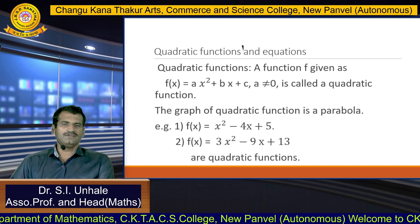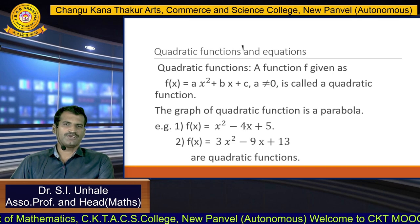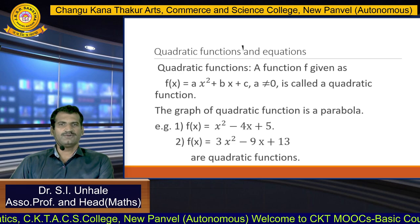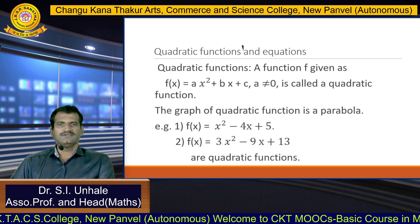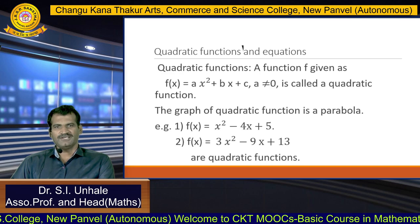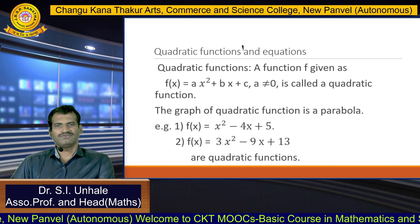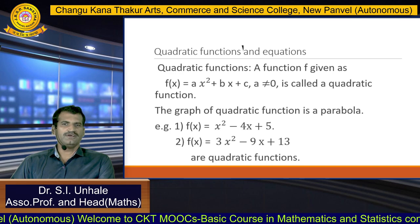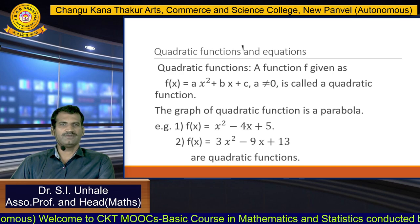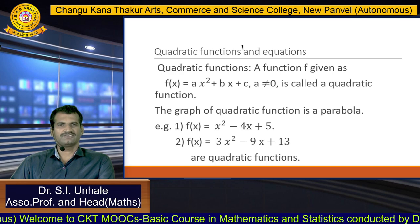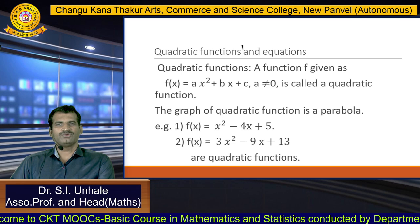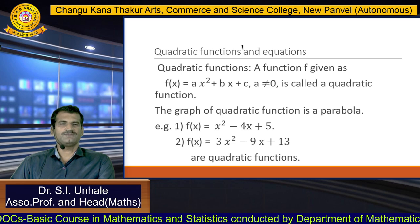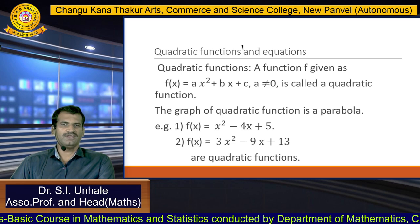For example, f(x) = x² - 4x + 5, where the coefficient of x² is 1, coefficient of x is -4, and the constant term is 5, is a quadratic function. Similarly, f(x) = x² - 9x + 13 is also a quadratic function. In both examples, the highest power of the variable x is 2.